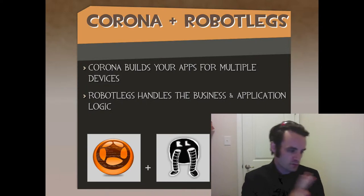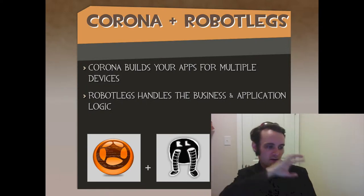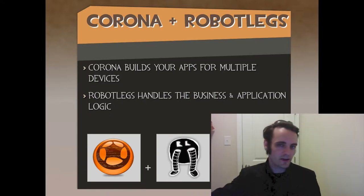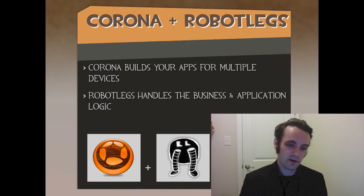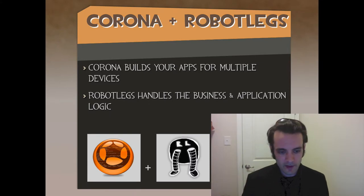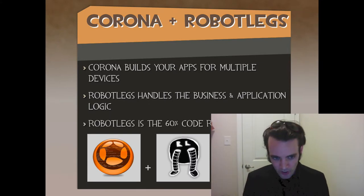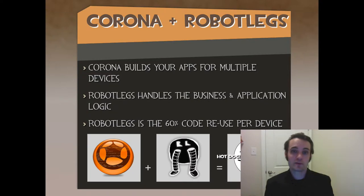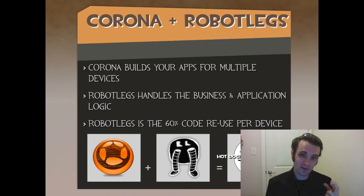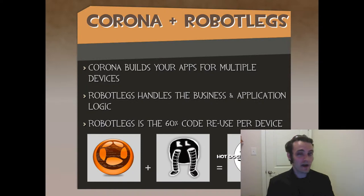RobotLegs gives you that bridge to extract and organize that code in a scalable fashion, as well as deal with multi-device development. RobotLegs is about 60% code reuse per device, hopefully. If you have a few mediators that you lose along the way, that's fine — you might have lost some battles but you won the war.